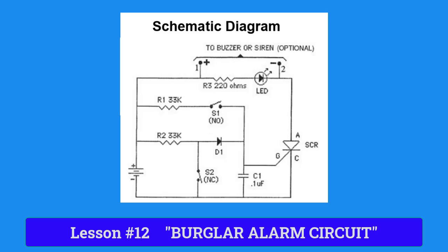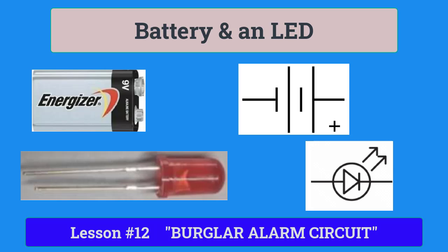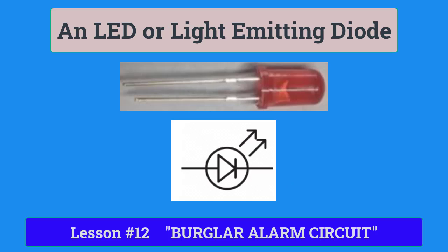Two additional components are taught in this lesson. One is the battery, and the other is the light-emitting diode, which we call an LED. Here is a picture of a battery and an LED next to their schematic symbols. The schematic symbol for an LED is just below its picture on the page. Notice that the LED symbol is made up of a diode symbol, which is inside of a circle, with two arrows pointing away from the symbol.